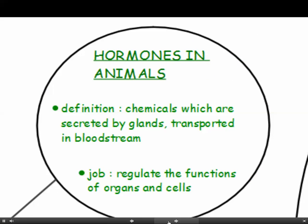So what are hormones? Hormones are chemicals which are secreted by glands and they are transported in the bloodstream to the target cell or the target organ. The job of a hormone is to regulate the functions of organs and cells.